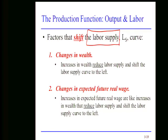A second factor is expected future income. If I know I'm going to make a lot more money in the future, I don't need to work as much now — I can borrow money to live now and pay it back after that big raise. This helps explain why many of you are here at university: college graduates have a substantial lifetime earnings premium over high school graduates. By being here, you're not working, so labor supply is less because you expect to earn more in the future.